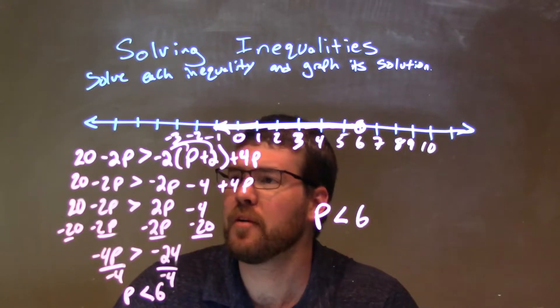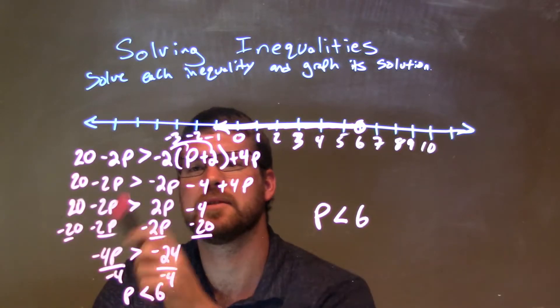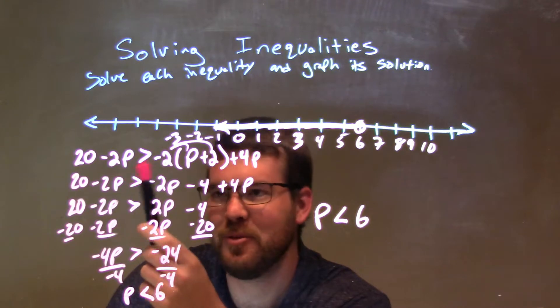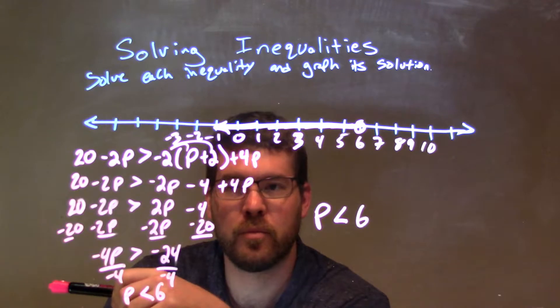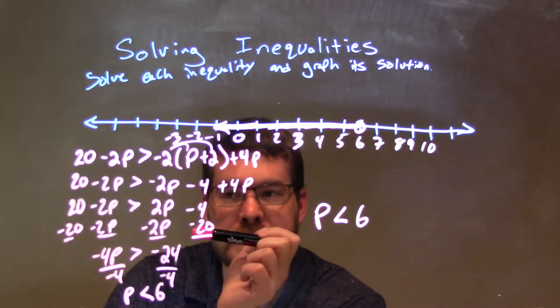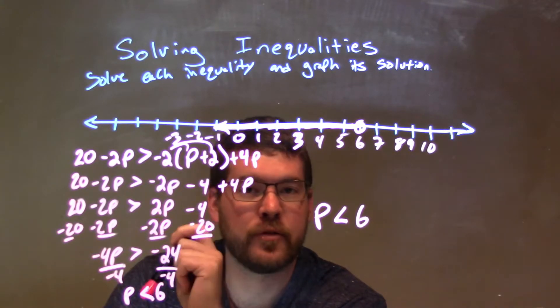So, let's recap. We're given 20 minus 2p is greater than negative 2 times p plus 2 plus 4p. I distributed the negative 2 into the parentheses, and then I simplified the right-hand side. That all gave me 2p minus 4.